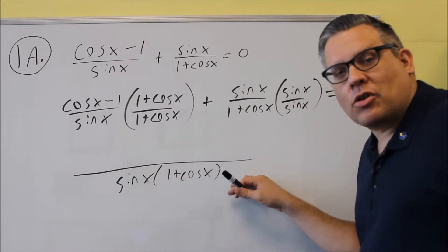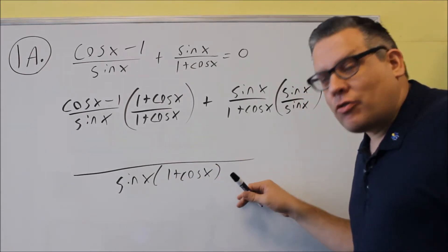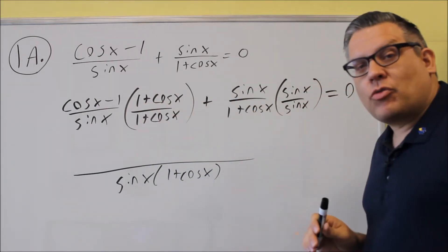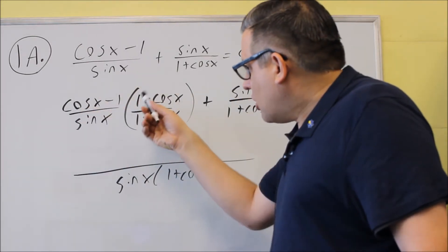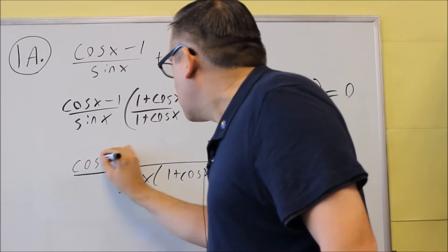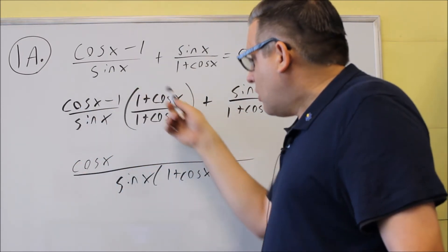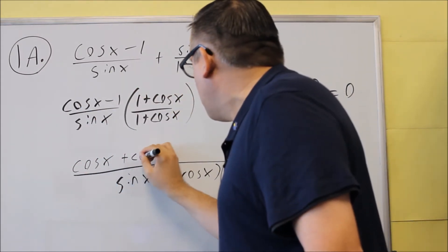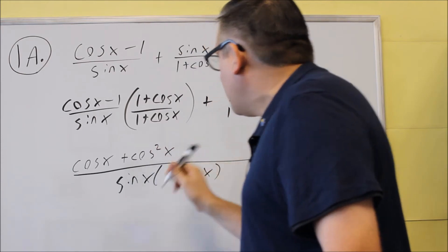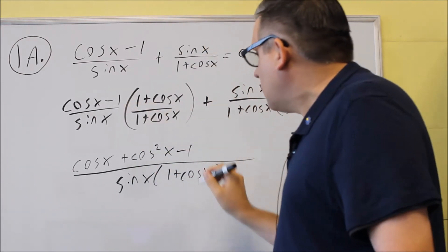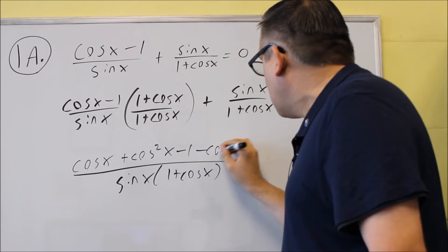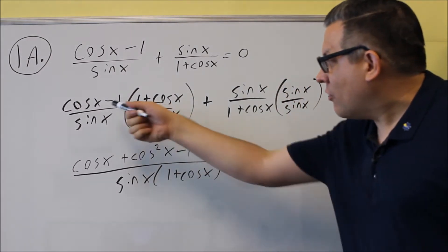So usually the bottom one, your common denominator, you want to keep that in the factored form. But the top ones, you definitely want to expand those. So when we do this, we're going to get cosine x times 1. So we get cosine x. And then we get cosine squared x. And then I have minus 1. And then minus cosine x. And that takes care of the first one.